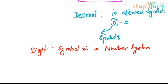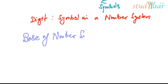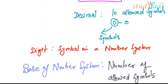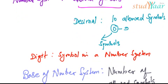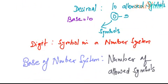The number of allowed symbols is known as the base of the number system. The base of a number system is the number of allowed symbols. Our decimal system has 10 allowed symbols, therefore it has a base of 10. I'll just write it as base equal to 10 for the decimal number system.